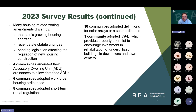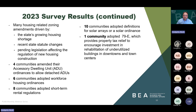A disproportionate number of these zoning amendments affected the regulation of new housing construction. While it's well beyond the scope of this survey to assign motive to specific amendments, we've identified a couple of factors probably driving the increase in housing-related zoning amendments: one, municipalities responding to the state's growing housing shortage; two, trying to respond to recent state statute changes which have placed certain restrictions on how communities regulate housing; and three, pending legislation affecting the regulation of new housing development that municipalities are trying to get ahead of.